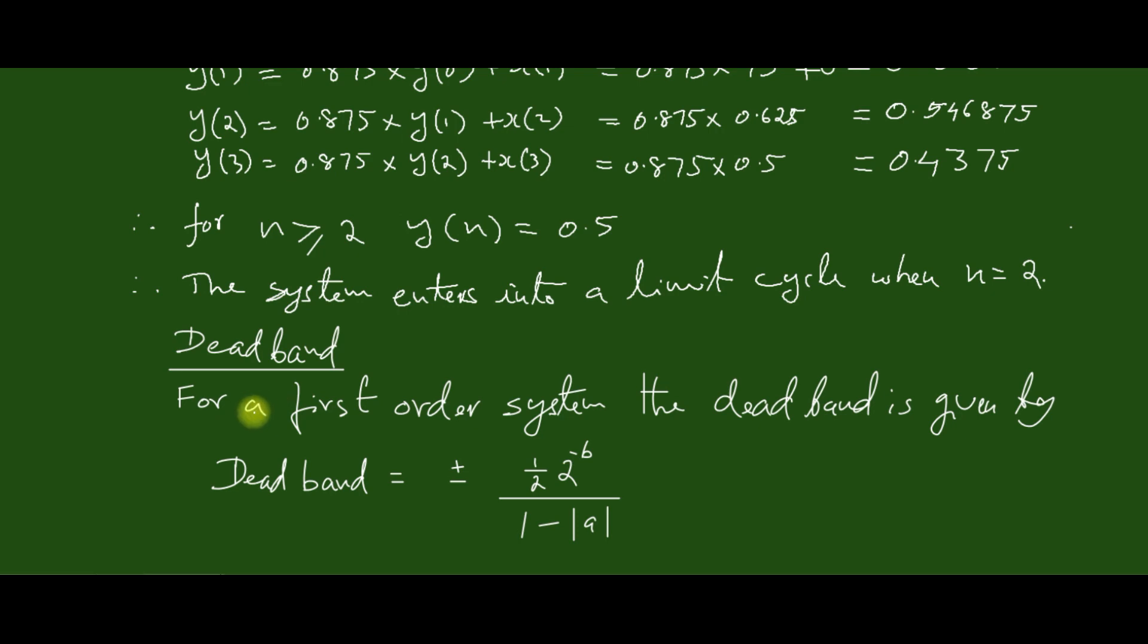Usually in this type of problem, the dead band will also be asked for computation. For a first-order system, the dead band is given by ±(1/2)·2^(-b)/(1-|a|), where b is the number of bits excluding the sign bit. In our case, it is 3, and a is the coefficient, which in our case is 0.875. Substituting, we get (1/2)·2^(-3)/(1-0.875), which equals ±0.5. So the limit cycle will oscillate between the values +0.5 and -0.5.